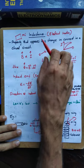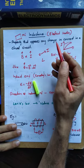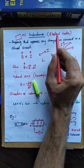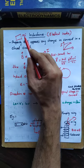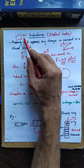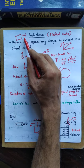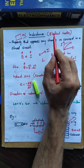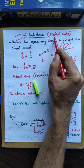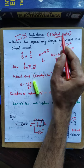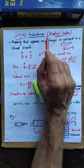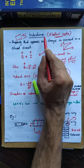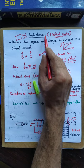Beyond electrical inertia, in ordinary mechanics we have Newton's laws of motion. Similarly, in an electrical circuit, inductance acts as electrical inertia. The inductance is inducted into the circuit, and the current growth rate will increase accordingly.